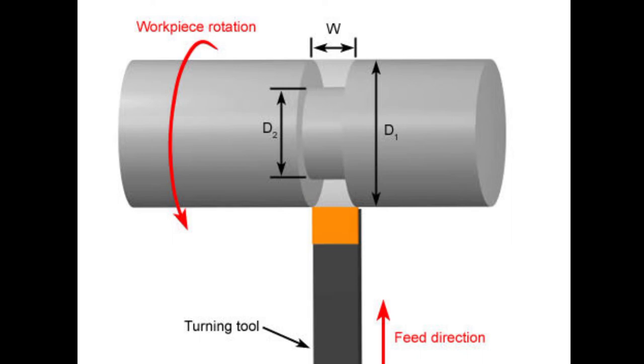3. Grooving. Grooving is a turning operation that creates a narrow cut. The size of the cut depends on the width of the cutting tool. Multiple tool passes are necessary to machine wider grooves. There are two types of grooving operations, external and face grooving.